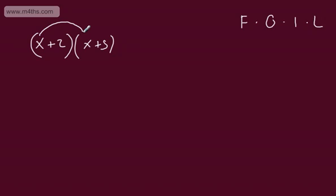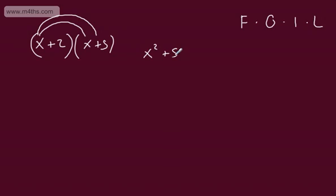The first terms are x multiplied by x. Both of these are positive terms, so x multiplied by x is x squared. Don't be tempted to write 2x — x times x is x squared. The outer terms are x multiplied by positive 5, which gives us plus 5x. The inner terms are positive 2 multiplied by x, which gives us plus 2x. And the last terms are positive 2 multiplied by positive 5, which gives us plus 10.